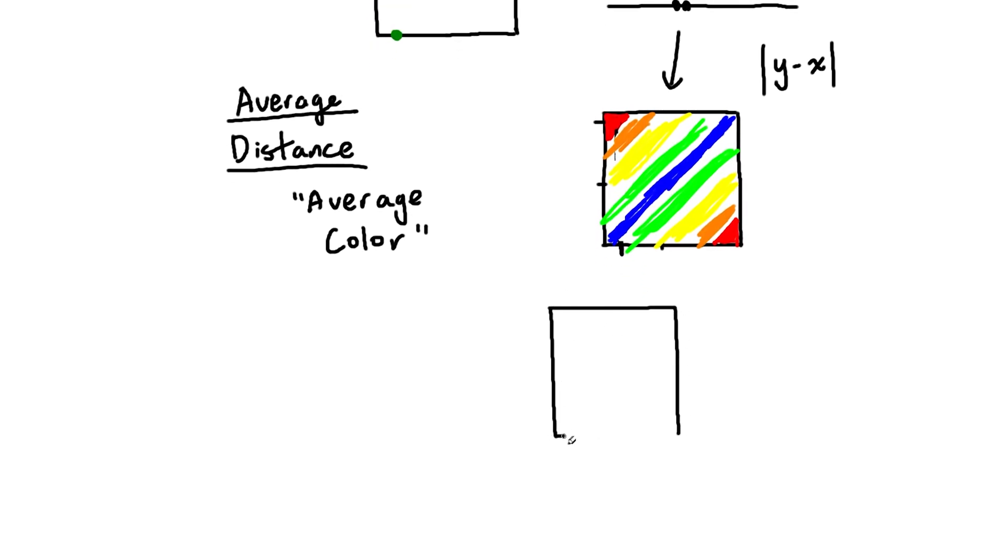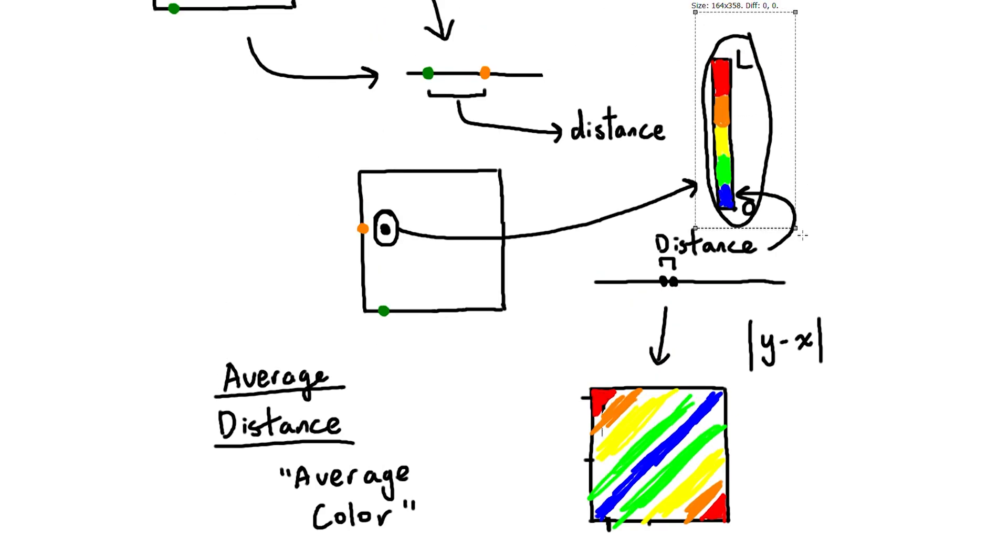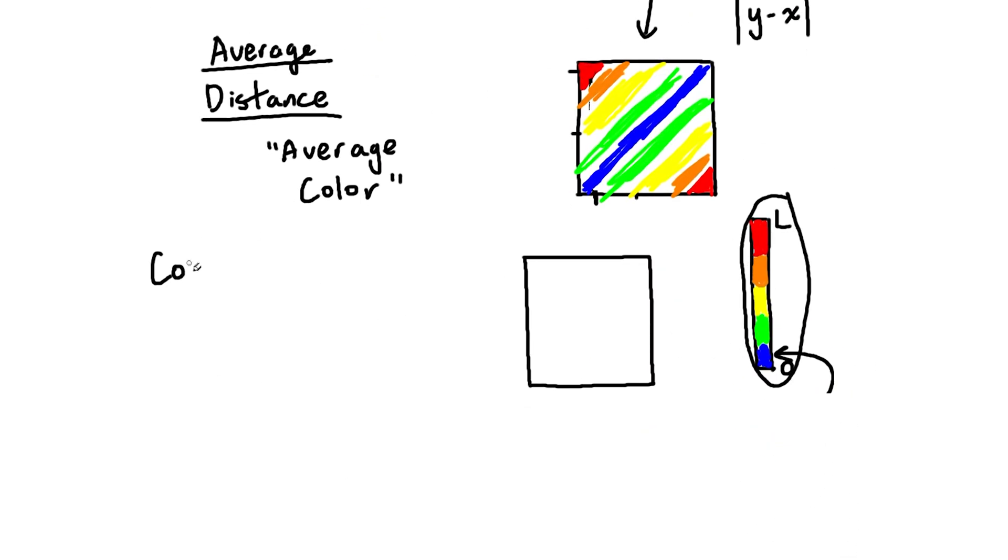The only problem is we have no idea how to find the average color of something. But let's look more closely at color. It moves continuously, smoothly, almost like a z coordinate. Yes, we're going to add another dimension. Color is going to be our third dimension, because by finding volume, we find the average z coordinate, which corresponds to the average color.